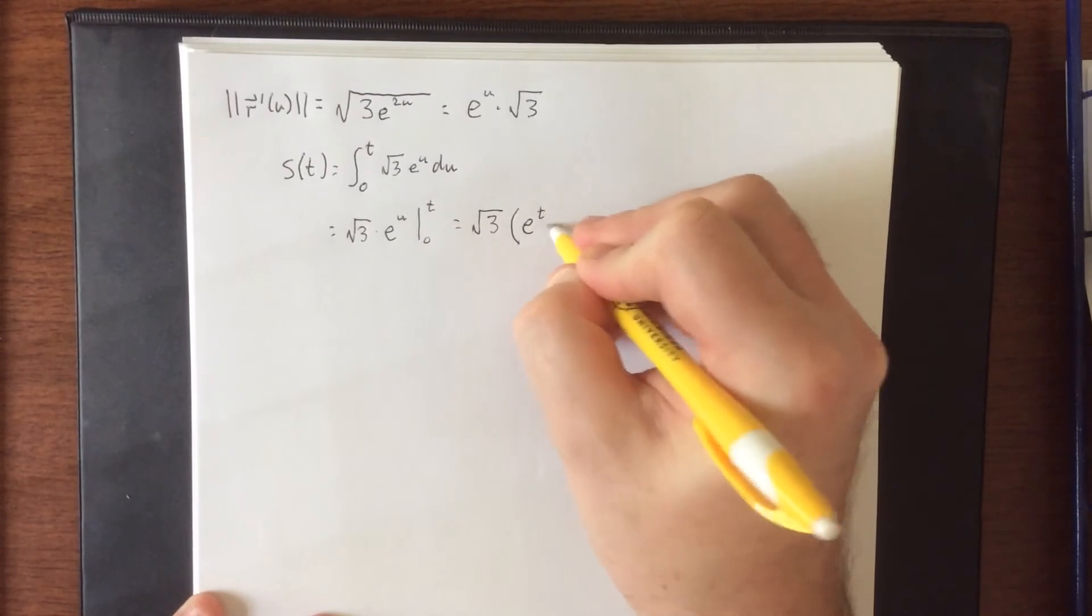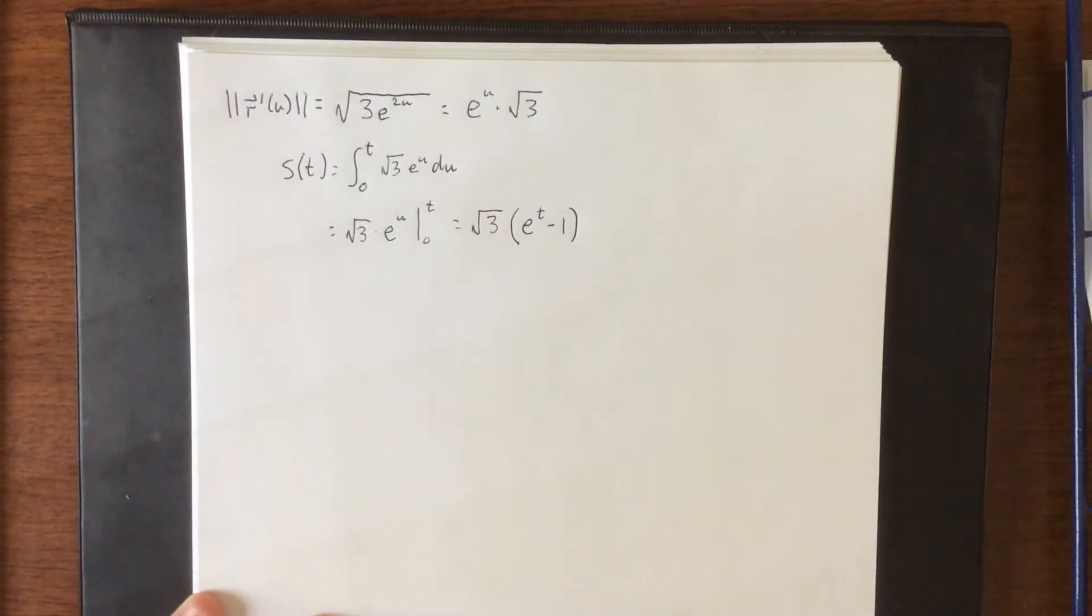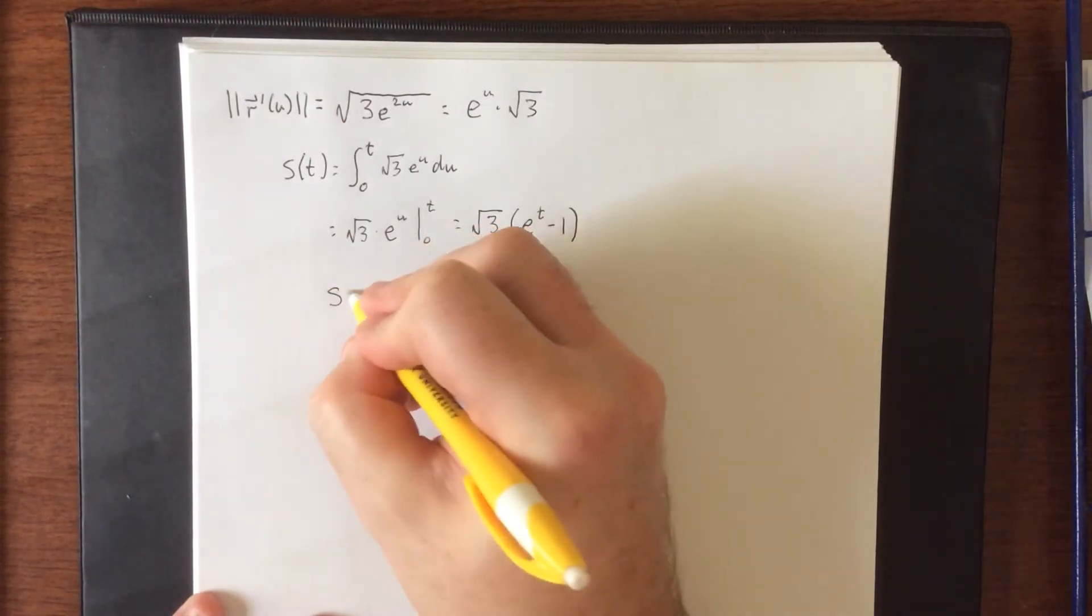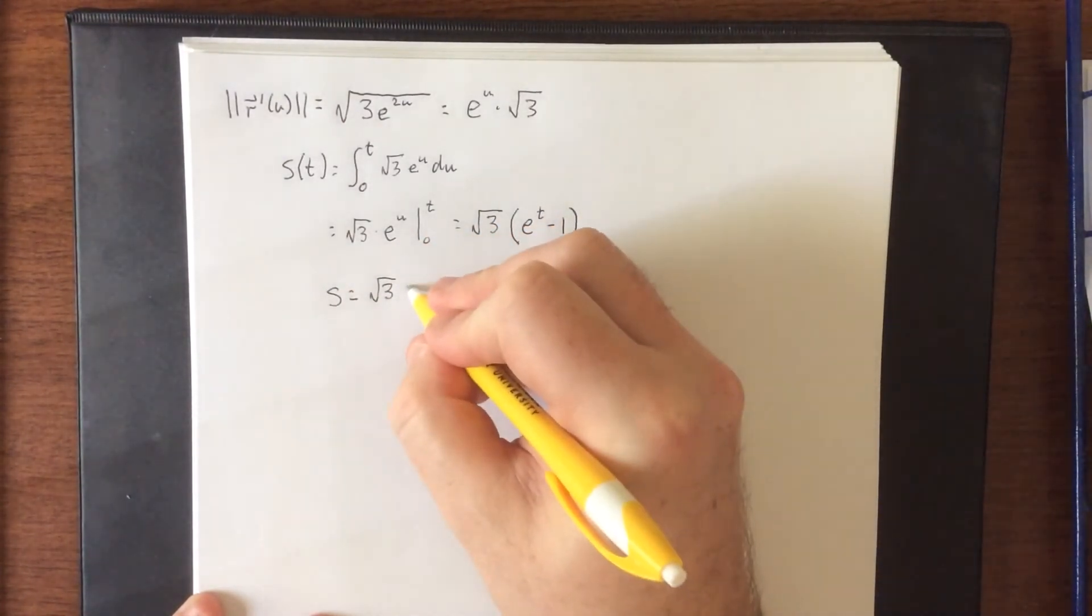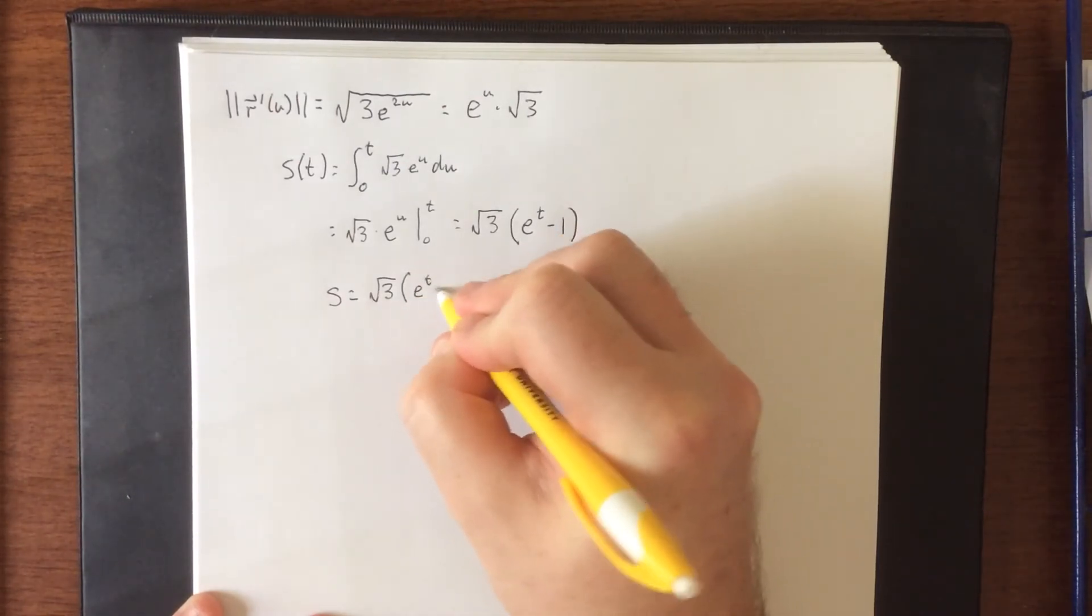This is going to give us e to the t minus e to the zero, like so. So here is the relationship that we currently have. S is equal to square root of three times the quantity e to the t minus one.